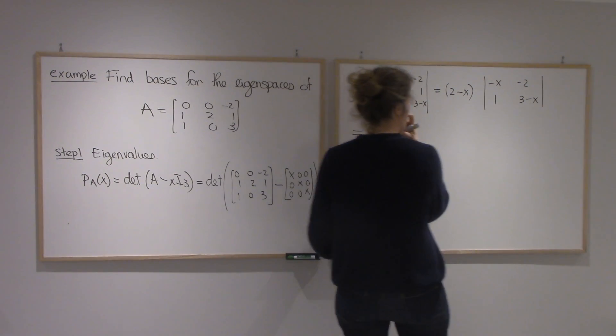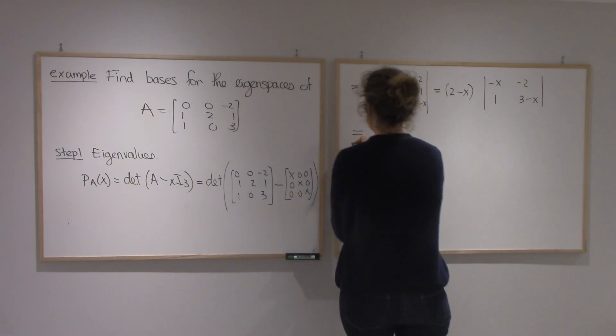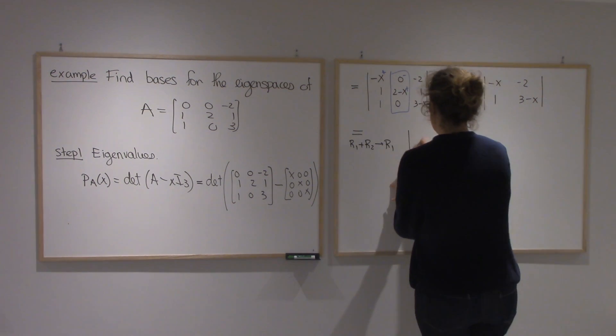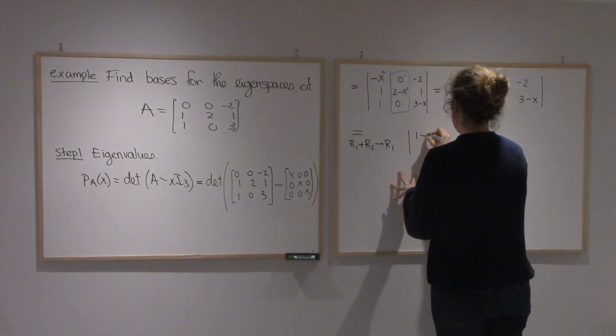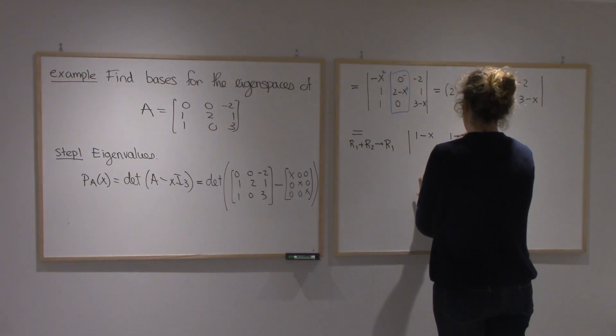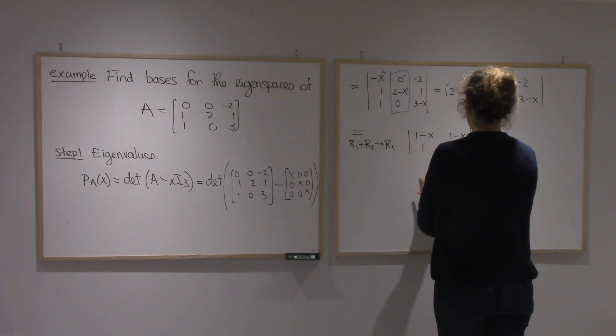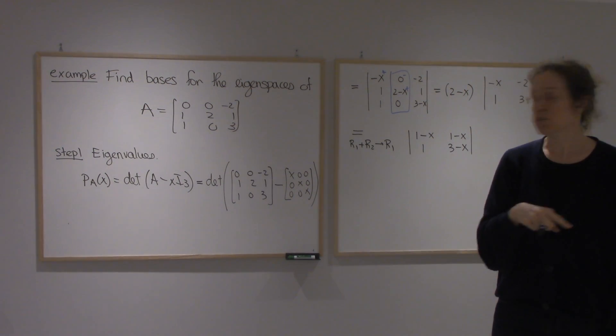So I'm going to take, it doesn't really matter which one you take, so row 1 plus row 2, and I'll put it in row 1. So I'm going to get 1 minus x, 1 minus x, 1, 3 minus x. Now I can factor 1 minus x.